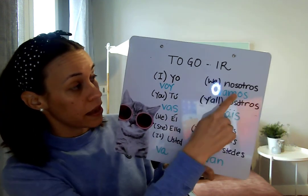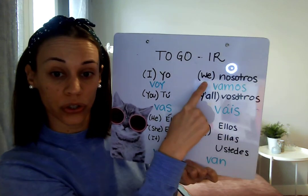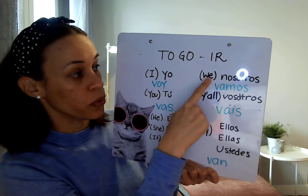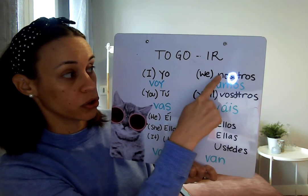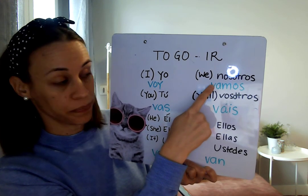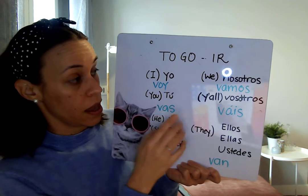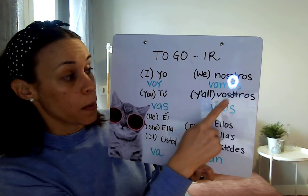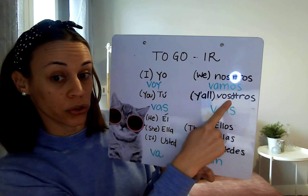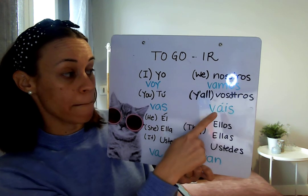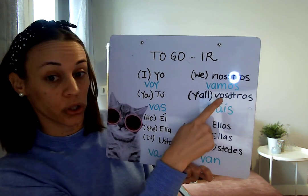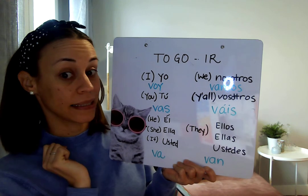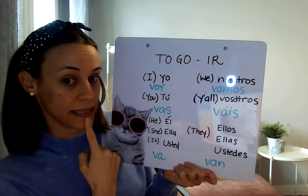Then we come to 'we,' nosotros. So when we use nosotros, we say vamos. Nosotros vamos. If we want to say 'y'all,' only in Spain, we say vosotros. Vosotros vais. You hear the B sound instead of the V sound.